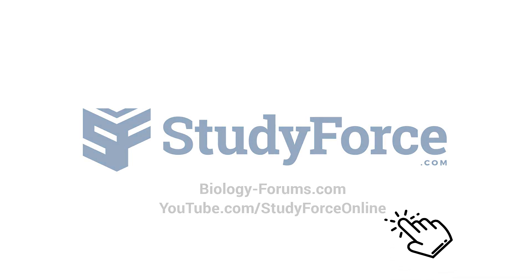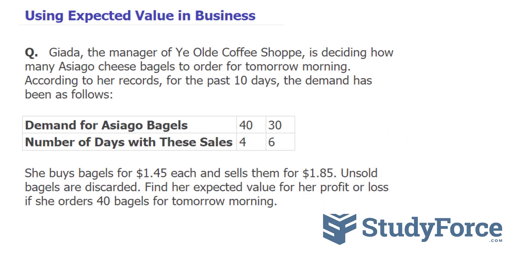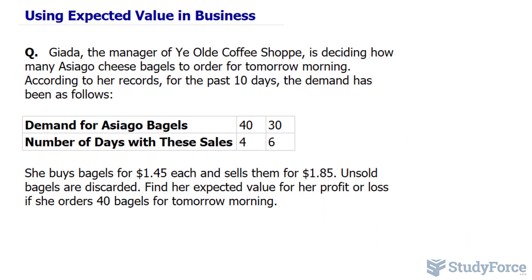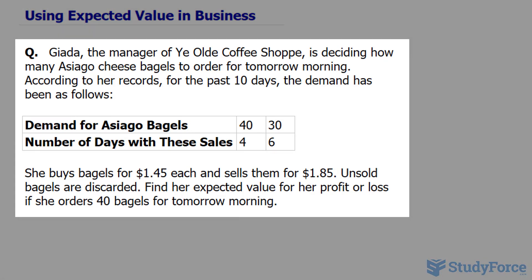In this lesson we will learn how we can use the idea of expected value in the business world. The question reads: Giada, the manager of Ye Olde Coffee Shop, is deciding how many Asiago cheese bagels to order for tomorrow morning. According to our records for the past 10 days, the demand has been as follows.